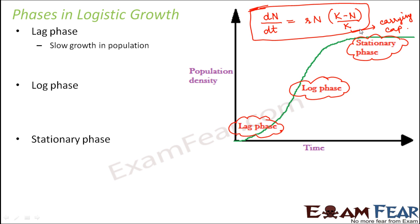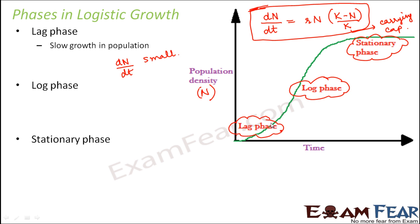During the lag phase, the value of N is small. Since dN/dt is strongly dependent on N, if N is small then dN/dt will also be small. The growth rate increases slowly, which is why the lag phase is characterized as the phase of slow growth.